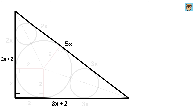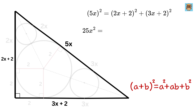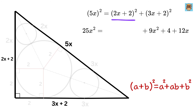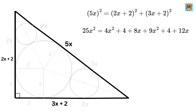Let us use Pythagoras theorem. We get (5x)² = (2x + 2)² + (3x + 2)². Using the (a + b)² formula, expand to get 9x² + 4 + 12x, and expand the other to get 4x² + 4 + 8x. Rearrange to get a quadratic equation.